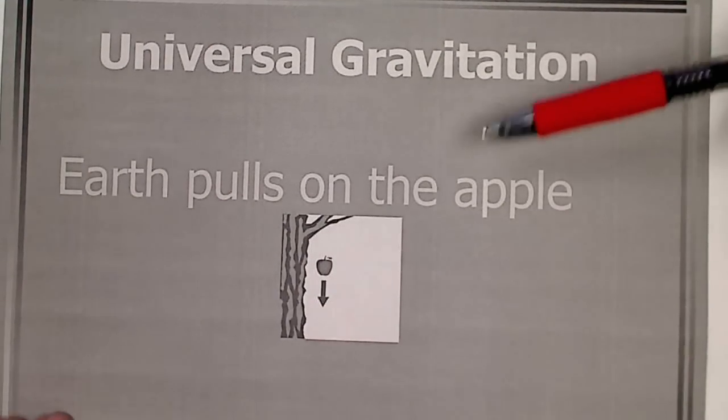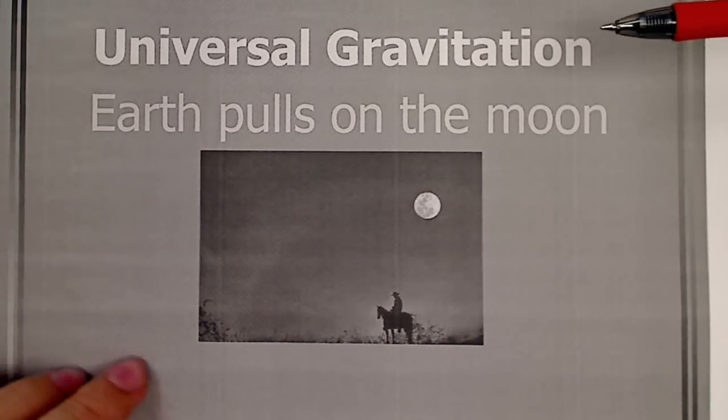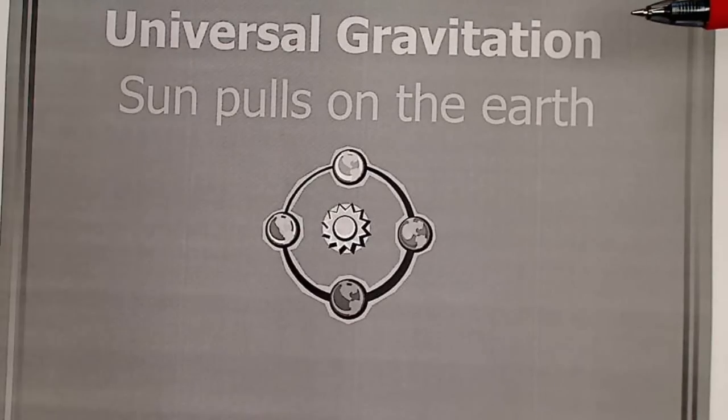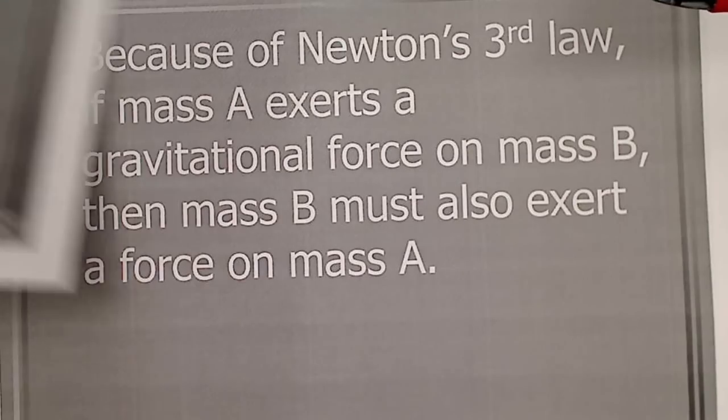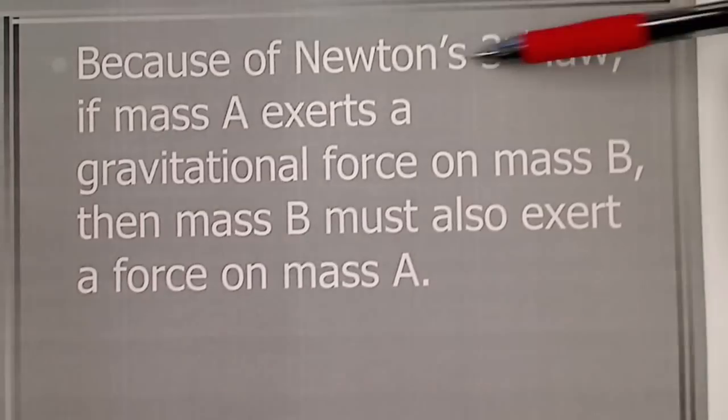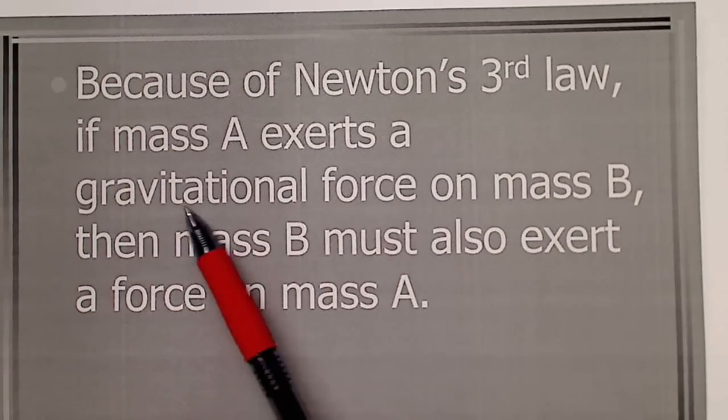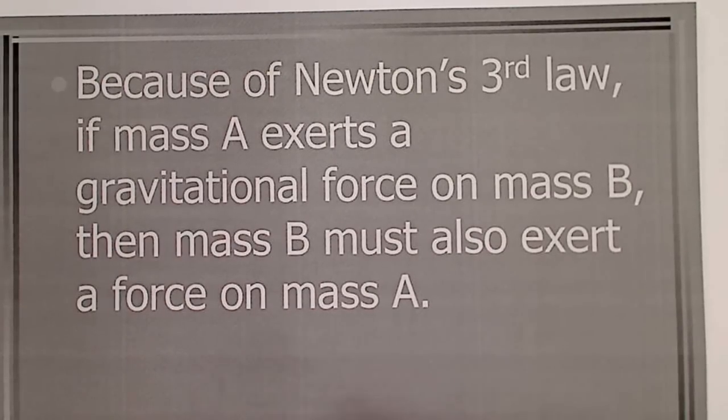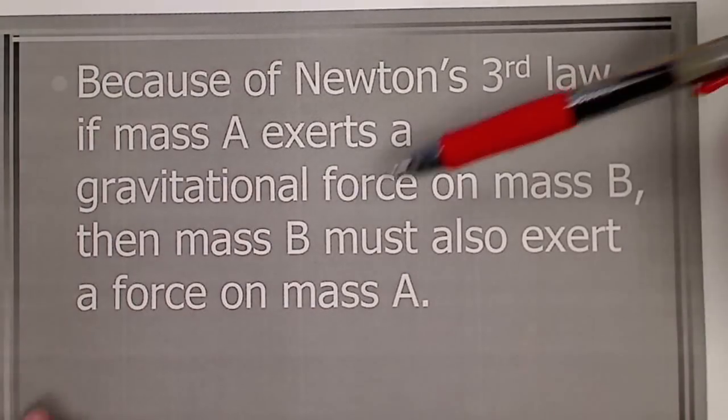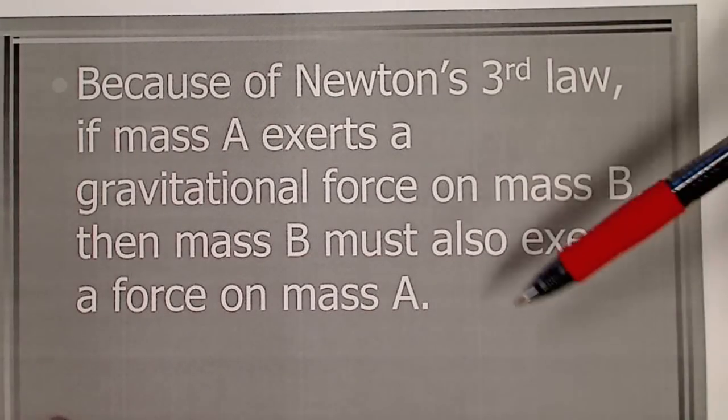So, we experience this. Earth pulls on an apple, Earth pulls on the moon, but the sun pulls on Earth because the sun also has mass. Anything that has mass. Because of Newton's third law, if mass A exerts a gravitational force on mass B, then there's an equal and opposite force. So, the force that A is on B is the force that B is on A. Equal and opposite.